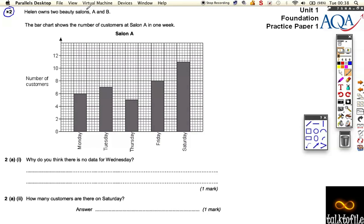So Helen owns two beauty salons, A and B, and this is salon A here. And the first question it asks is, why do you think there is no data for Wednesday? Well, there could be a number of reasons, and there's a number of things you've got to think about this, if it's a beauty salon. Why do you think there's no data? Well, one of the things I thought is that the salon is shut on Wednesdays. And that might be why there's no data there at all. There's other reasons you can have, but that seems like the most obvious one to me.